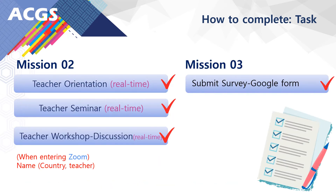Mission 2 is to attend the real-time Zoom meetings from Day 1 to Day 4: Day 1 for orientation, Day 2 for teacher seminar, and Days 3 and 4 for teacher workshop discussion. When you enter the Zoom meeting, your name must be shown on screen in the format: name, then in brackets your country and position, for attendance check. Mission 3 is to submit the questionnaire at the end of the event, which will be sent to your email by January 17th.